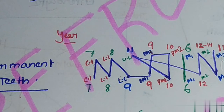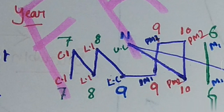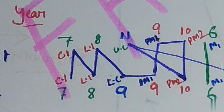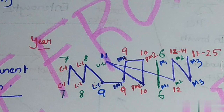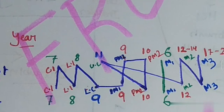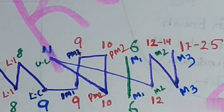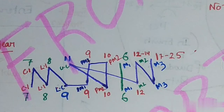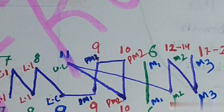Lower canine develops at nine years of age. First premolar also develops at nine years, and the second premolar develops at ten years of age. Upper canine develops at eleven years of age.